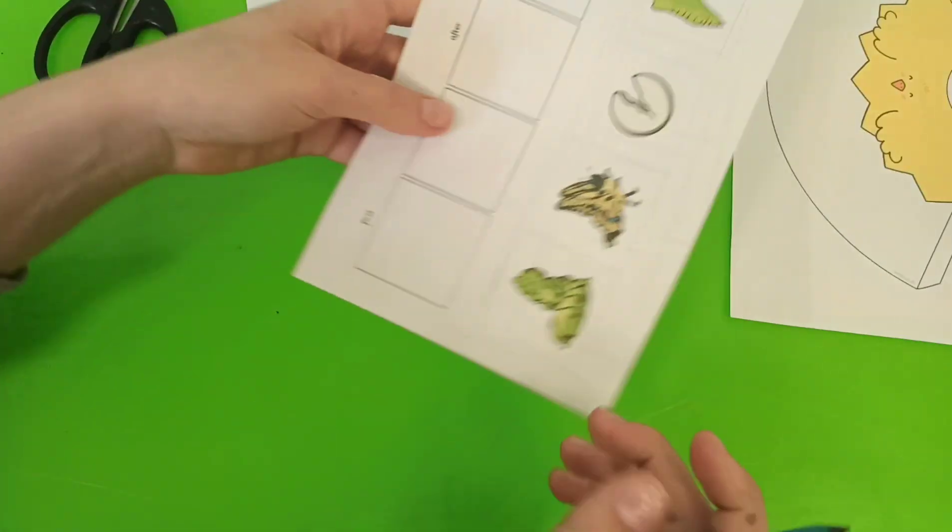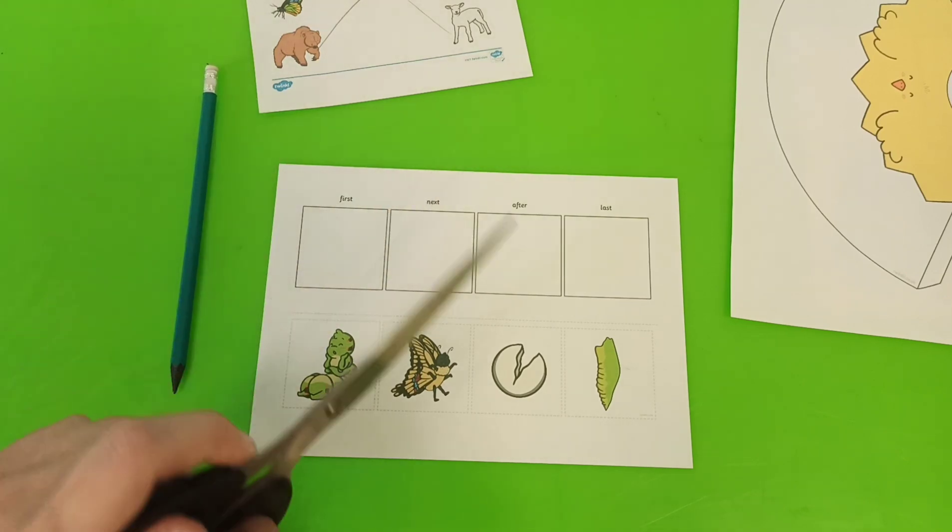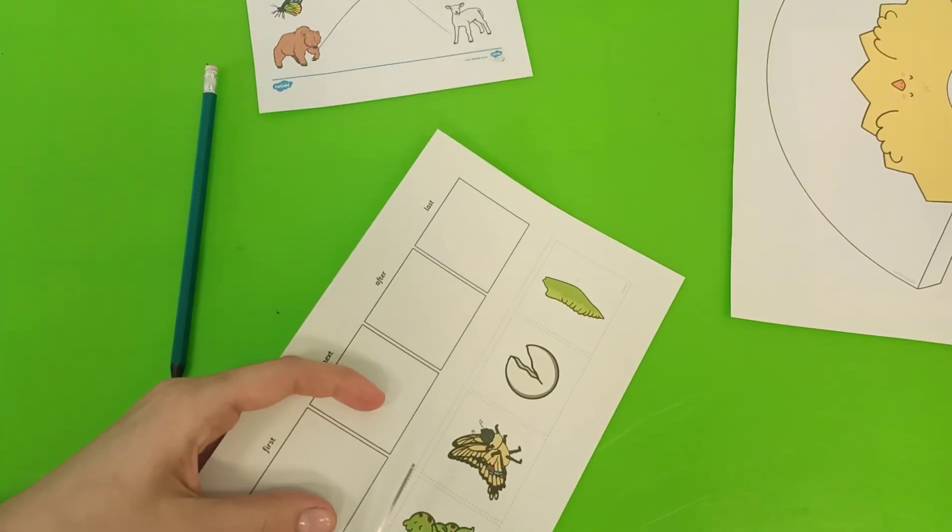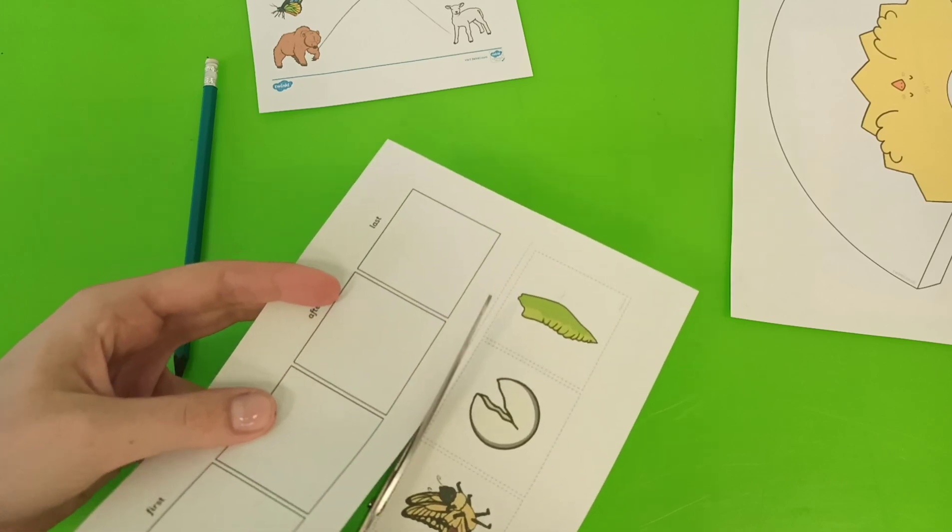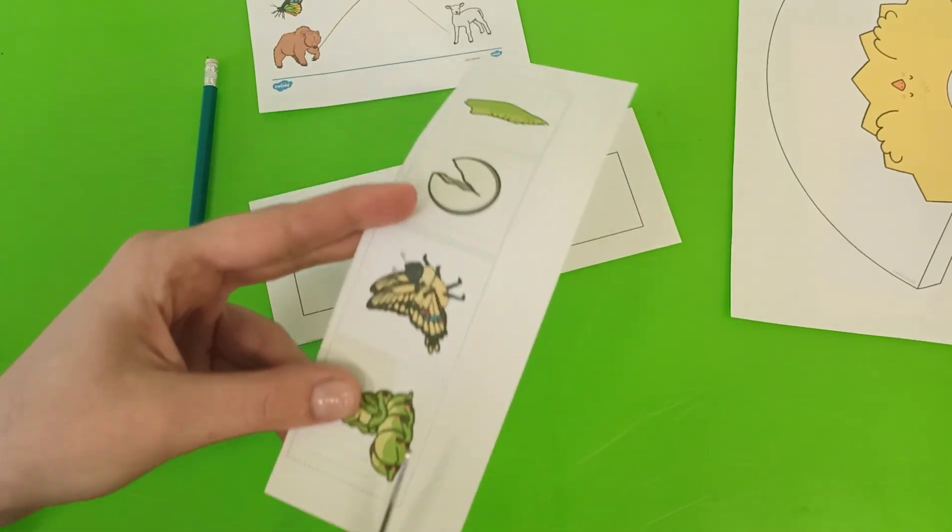Now let's do the next one. It's what comes first and what comes after. You will need scissors like this. Let's cut out those squares.